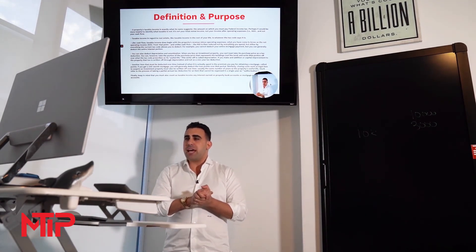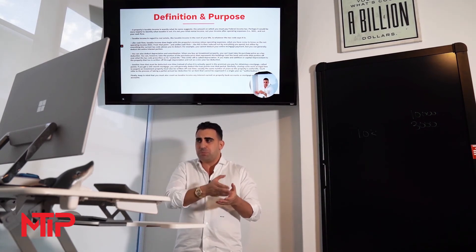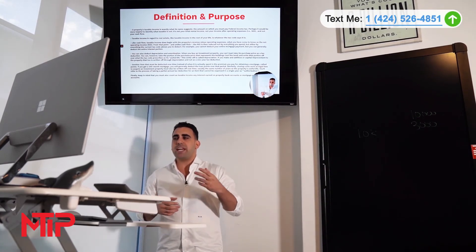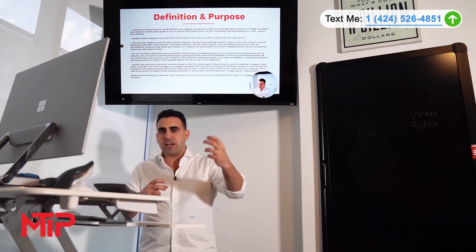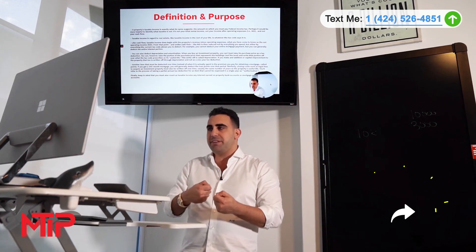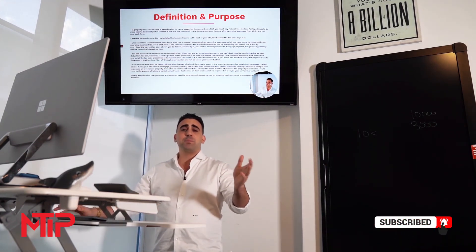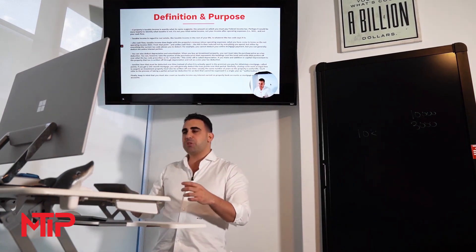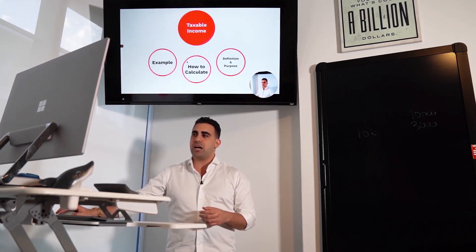Another item that must be deducted over time instead of when it's actually spent is the premium you paid for obtaining a mortgage — what we call points. Lenders and bankers charge you percentage points to generate a deal, and those costs are subsidized just like depreciation. This type of expense is amortized over time and deducted over time.